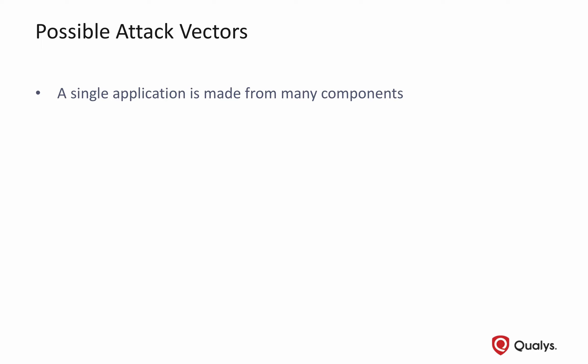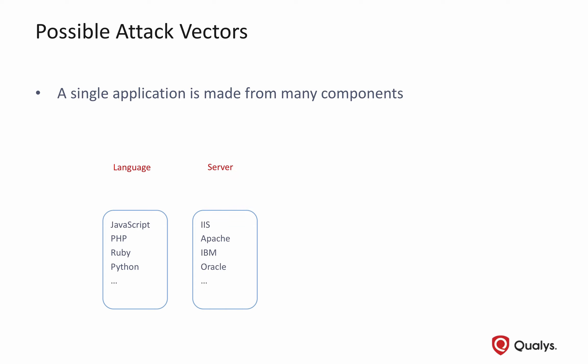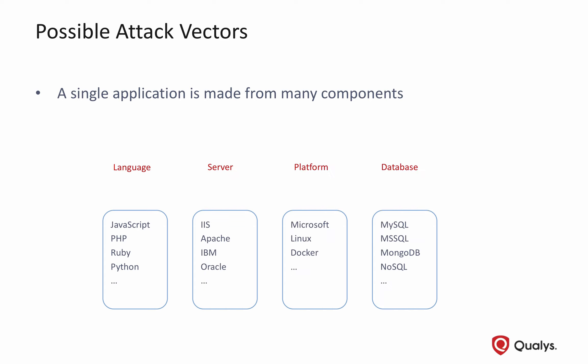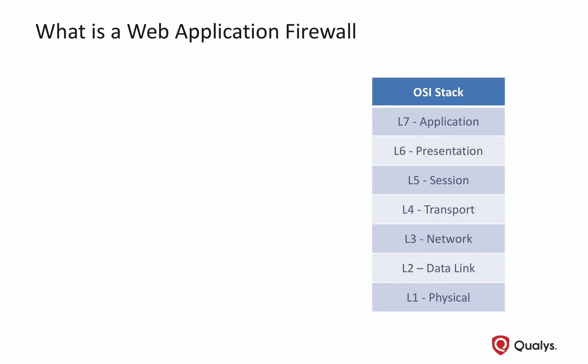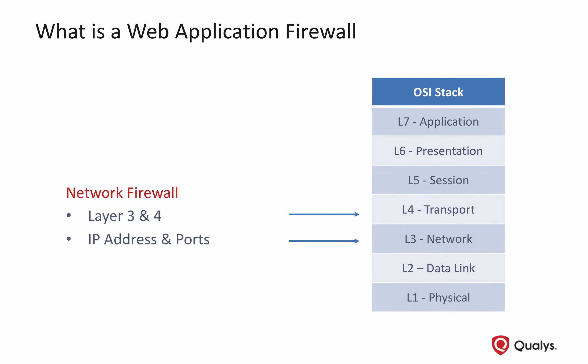A single application can be made from many different components. The most crucial components are the programming language, web server, operating system platform, and the database. Each of these components can be an attack vector. When targeting a web application, the attack can be against any or all of these components.